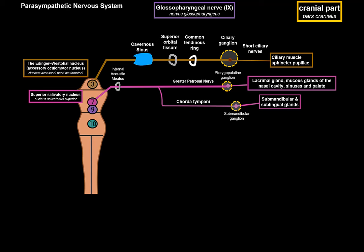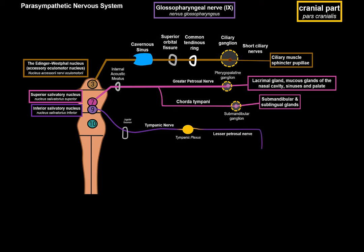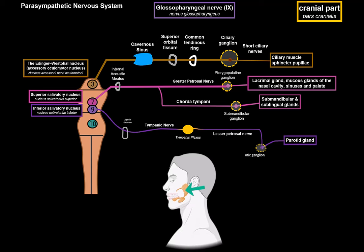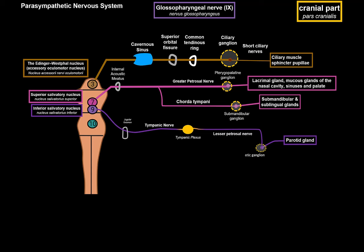Now the glossopharyngeal nerve. The glossopharyngeal nerve has its parasympathetic origin within the inferior salivatory nucleus, which gives off preganglionic parasympathetic fibers that go through the jugular foramen. They travel through the tympanic nerve, through the tympanic plexus, and ultimately leave as the lesser petrosal nerve, which ends up in the otic ganglion. The otic ganglion then gives off postganglionic parasympathetic fibers to the parotid gland, stimulating it to increase its secretions — lots of watery secretions and salivary amylase — all to lubricate food and aid chemical digestion.